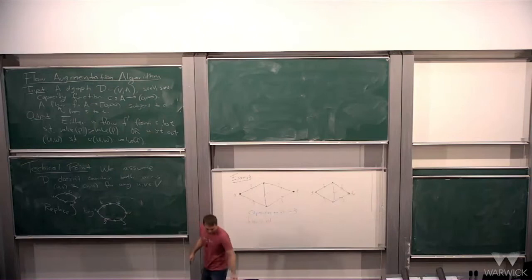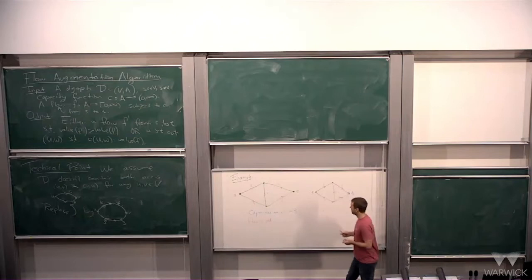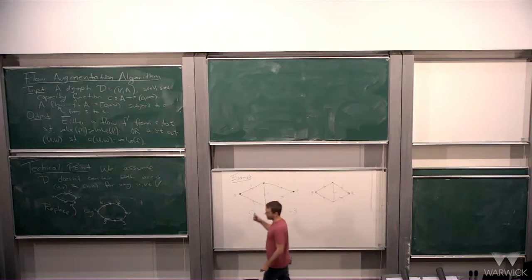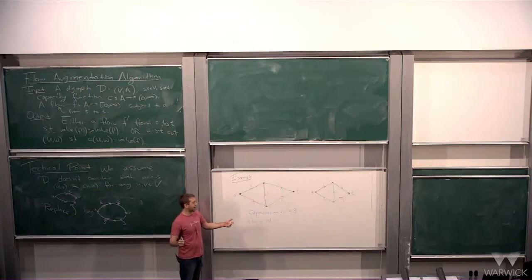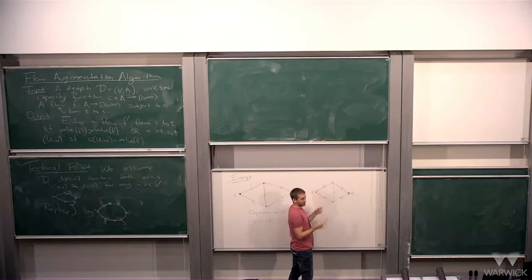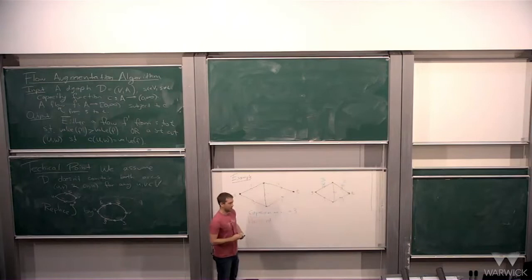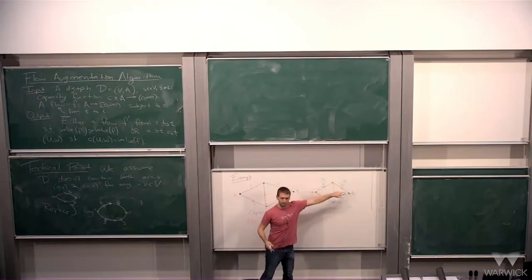There's one straightforward way to increase the flow. If you have a path going from s to t where none of those arcs are at max capacity, just increase the flow along all of them. If I change this 1 to a 3 and this 1 to a 3, it satisfies the Kirchhoff condition — flow in equals flow out — as long as I increase these by the same amount.